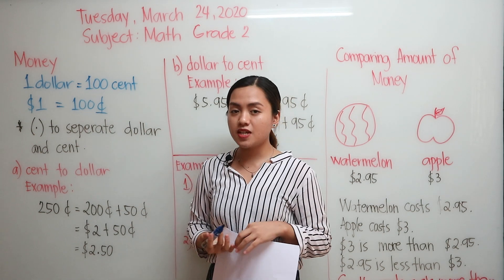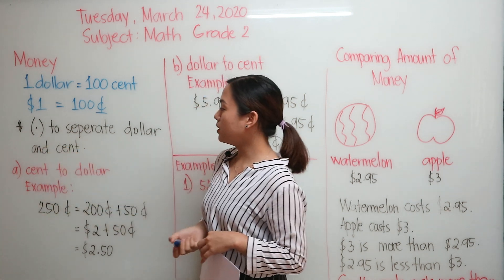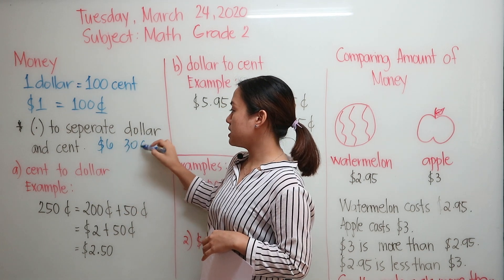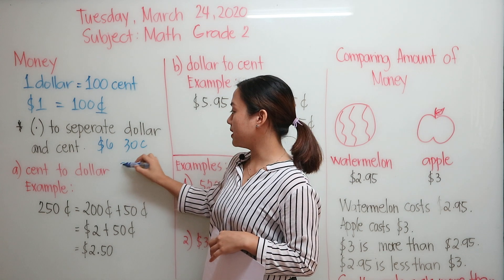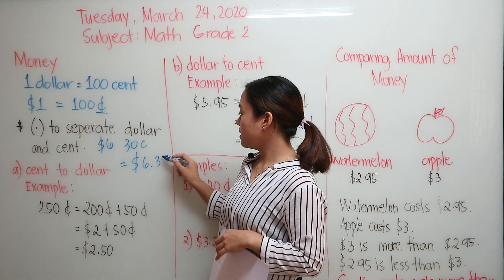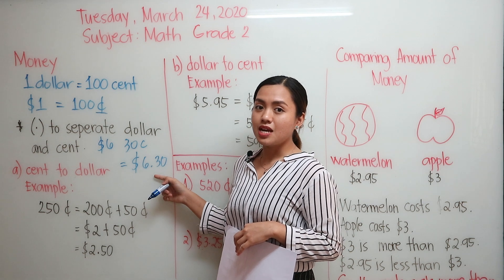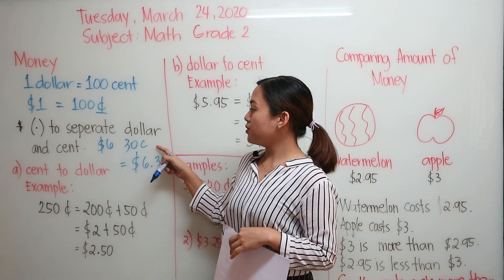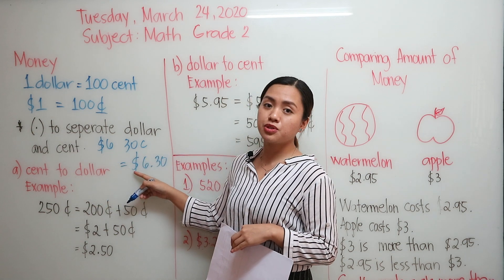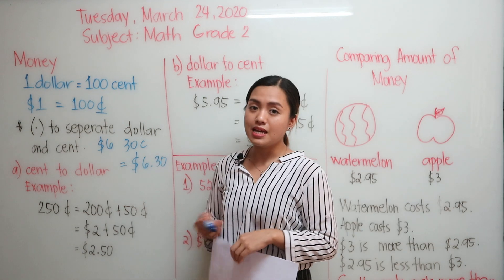Now in order for us to separate dollar and cent, we can use a decimal point. So for example, if we are going to separate $6.30, then we can write it as 6.30, or we are going to read this as $6.30. Now we cannot use two signs together. So if you are going to use dollar, it should only be dollar, and if you are going to use cents, then it should only be cents.